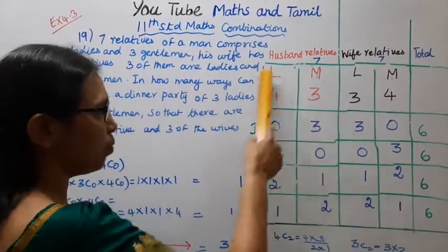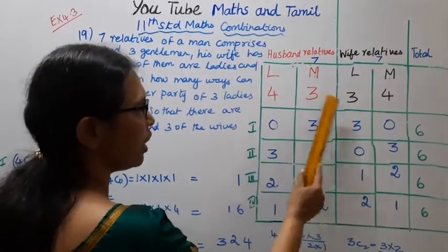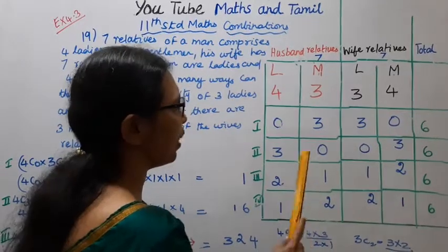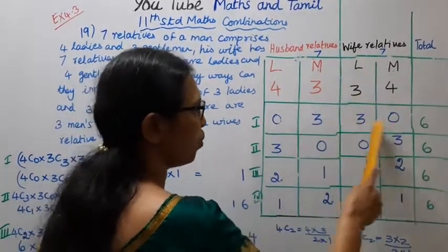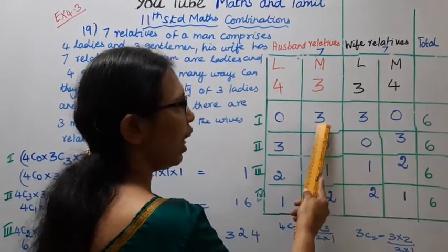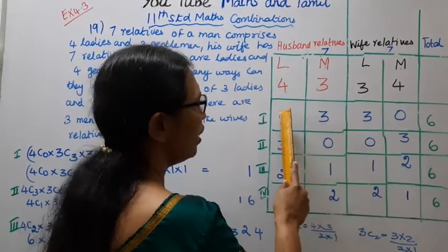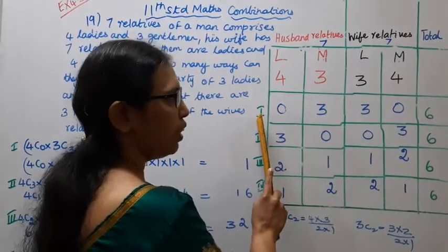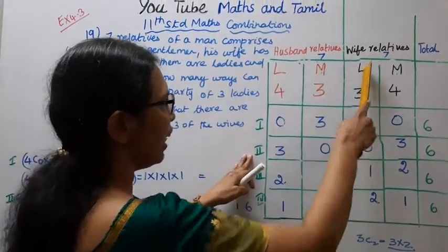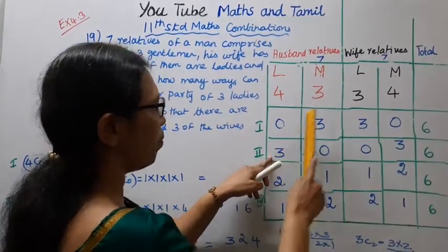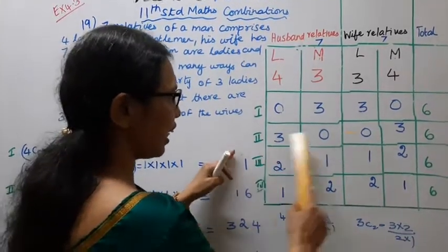3 men's husband relatives, 3 wives' relatives. This condition — here are 3, choose from 4 ladies and 3 gentlemen. Type 1: all ladies from one side. Type 2: the ladies — men 3 plus 3 is 6. This is the second type, third type — this involves the ladies invited.